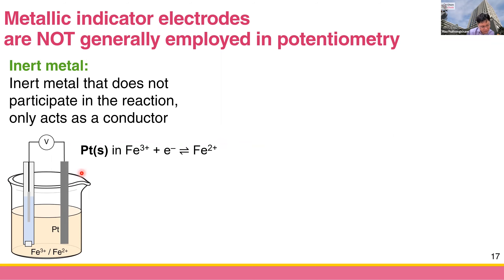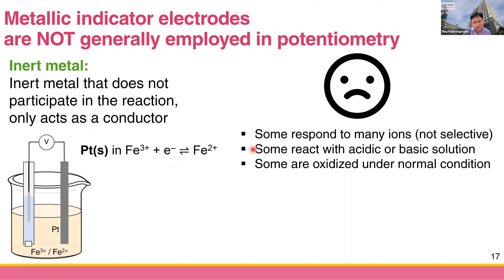These metallic indicator electrodes are not popular because, first, they respond to so many ions — in analytical terms, they are not selective. For example, with the inert metal electrode, if in addition to Fe³⁺ and Fe²⁺ you also have silver ions, platinum(IV) ions, or manganate, all of these ions will shift the electrode potential and ruin your analysis.